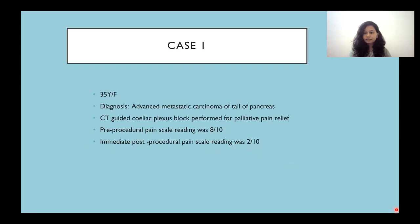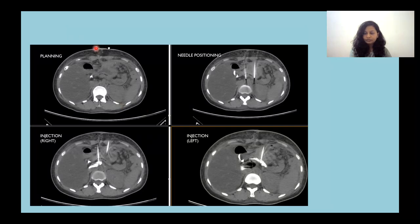Case 1 is a 35-year-old female with advanced metastatic carcinoma of the tail of the pancreas. Once the block was performed, her pre-procedural pain scale reading was 8 out of 10, whereas the post-procedural scale was 2 out of 10. As we can see, images show the planning phase, positioning of the needle confirmed on CT, and injection into the right side and left side.